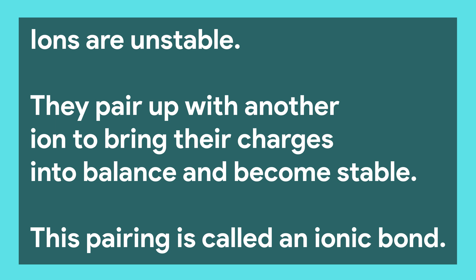This means that when a cation and an anion are close together, the conditions are favourable. They will join together to make a stable molecule. This pairing is called an ionic bond.